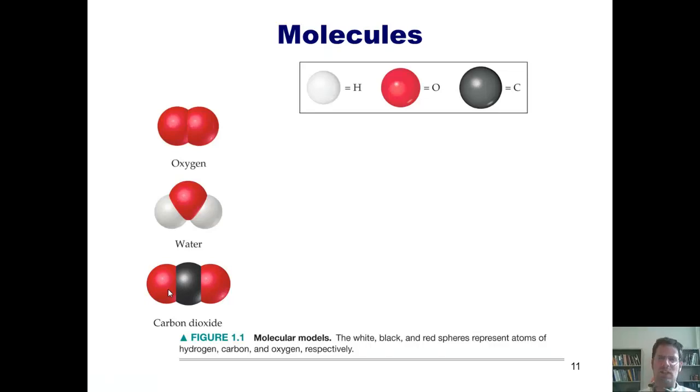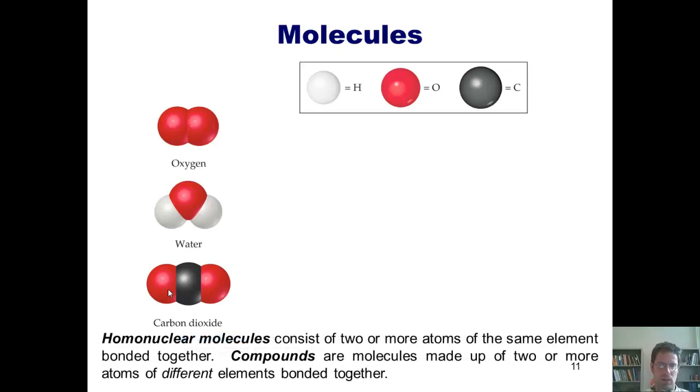Now, I should specify here that there are actually two different kinds of molecules. Homonuclear molecules consist of two or more atoms of the same element bonded together. Compounds, in contrast, are molecules that are made up of two or more atoms of different elements bonded together. So, in this example, oxygen is a homonuclear molecule because it's made up of two different oxygen atoms. They are the same element bonded together, while water and carbon dioxide are both considered compounds because each of them have multiple different kinds of elements bonded together.